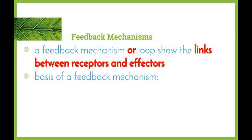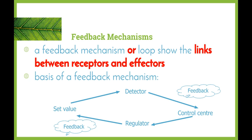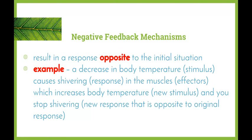A feedback mechanism or feedback loop shows us the links between the receptors and the effectors. This picture shows a basic skeleton framework of a feedback mechanism: we have our set value, detected by our receptors, the message goes to the control center, our regulators bring about the change, and we bring it back to our set value. This continues until we return to homeostasis. Negative feedback mechanisms result in a response that is opposite to the initial situation — temperature increasing or decreasing is a perfect example.